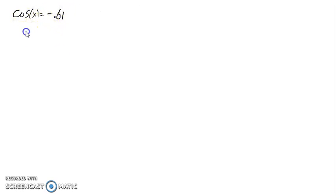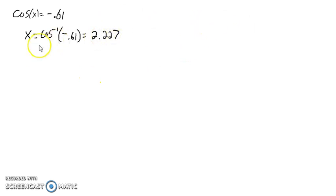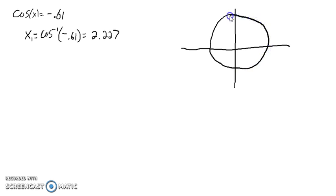We're going to solve cosine x equals negative 0.61. Our first solution is going to come from the inverse cosine, which we can pull out our calculators and come up with 2.227. Now the cosine is the x-coordinate on the unit circle, so we're looking for angles that have a cosine value of negative 0.61. Our first angle that has that cosine value is the one we found using the inverse cosine.